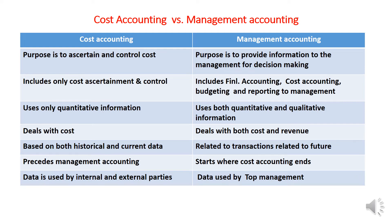The purpose of cost accounting is to control cost and ascertain cost. But management accounting aims at helping management in decision making. Cost accounting includes only cost ascertainment and control — just those two aspects. Management accounting consists of financial accounting, cost accounting, budgeting, as well as other aspects. So management accounting is a wider concept.